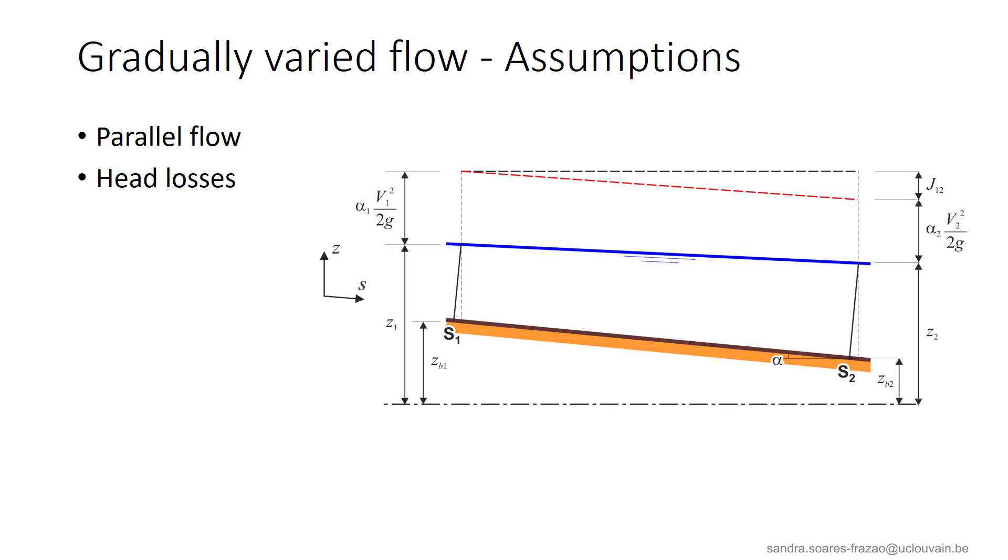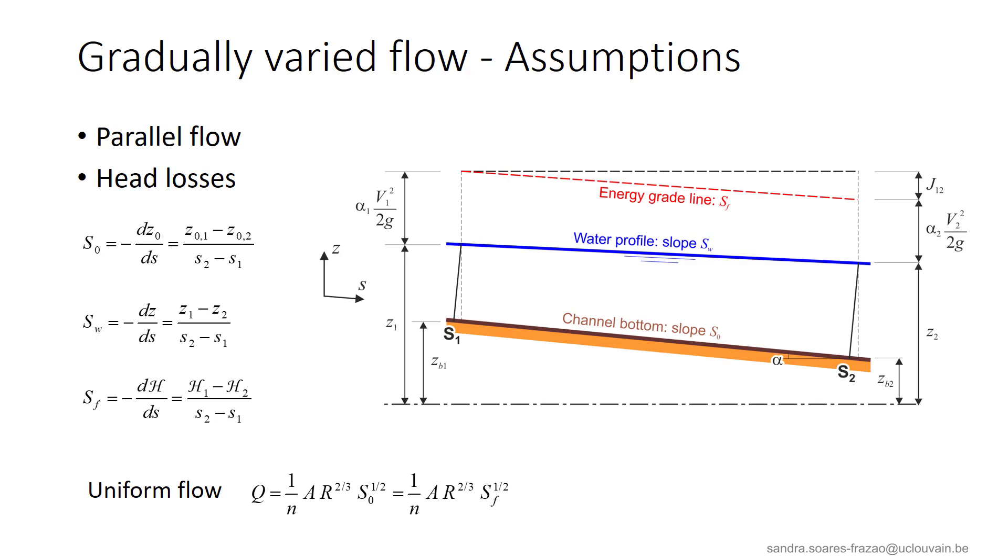In a gradually varied flow, we can define three different slopes. The bed slope S0, the free surface slope SW, and the energy grade line slope SF, that represents the head losses per unit length. We also know that for a uniform flow, S0 equal SW equal SF, in such a way that it is possible to write this equation here, either with S0 or with SF.